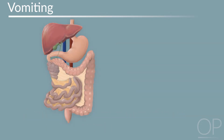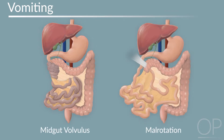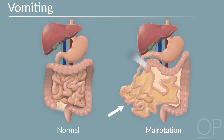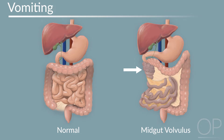One cause of abdominal pain with bilious vomiting is midgut volvulus in the setting of malrotation. Malrotation occurs during embryonic development and leads to abnormal positioning of the cecum and appendix in the right upper quadrant instead of the right lower quadrant, and the intestines to the right side of the abdomen. With midgut volvulus, the intestines become twisted, leading to obstructed mesenteric blood flow and bowel ischemia. The emesis is bilious because the obstruction is distal to the ampulla of Vater, where the common bile duct opens into the duodenum.